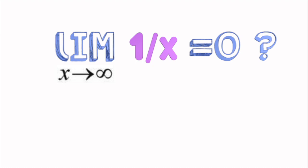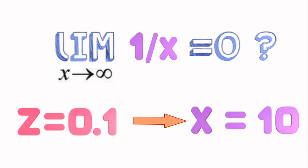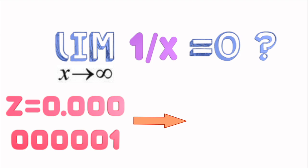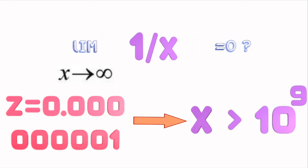So, if z is 0.1, we can take x equal to 10. If z is one billionth, any x greater than 10 to the 9 will be sufficient.